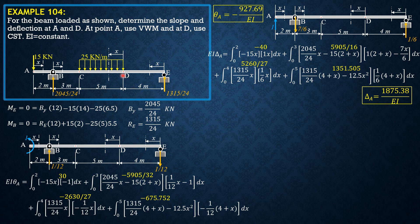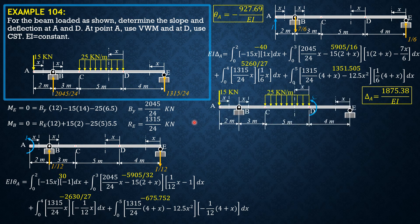For Castigliano's second theorem, apply a couple C counterclockwise at D — that is the positive slope direction. Due to C alone (combined with the actual loads), the reaction at B is upward. Summation of moments about E: reaction times 12 equals C, so the reaction due to C is C/12.